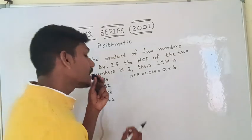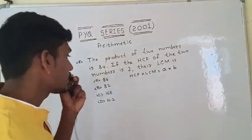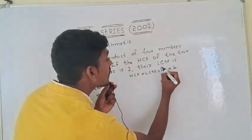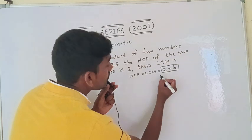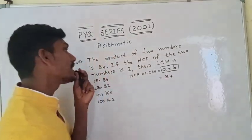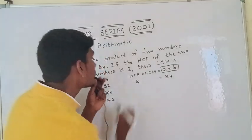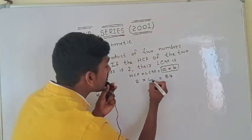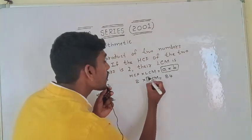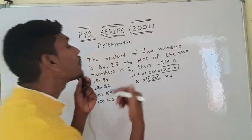The two numbers HCF and LCM, the product of HCF and LCM is 84. If we have HCF of two numbers, it's 2. HCF and LCM are equal to the product. If we have A and B, HCF times LCM equals the product.